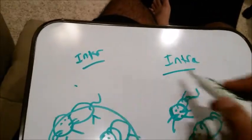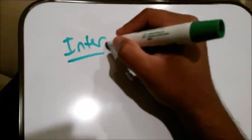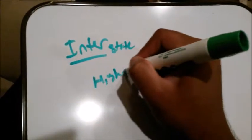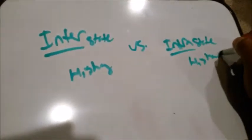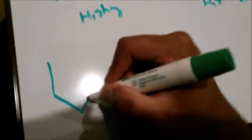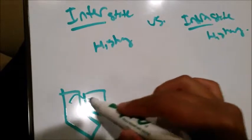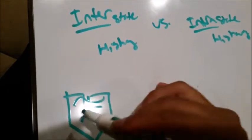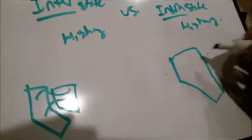Since inter- and intra-specific competition sound so similar, an easy way to remember this is to think like an interstate highway versus an intra-state highway. An interstate highway connects different states together — like California and Nevada. An intra-state highway is just within one state, like just in California. That's the way to remember it.